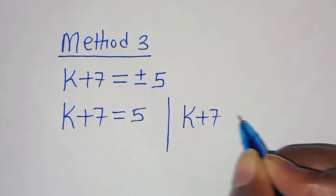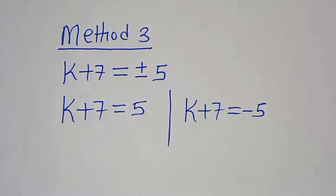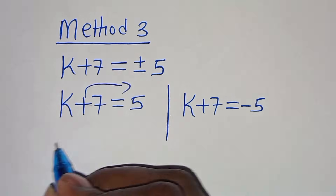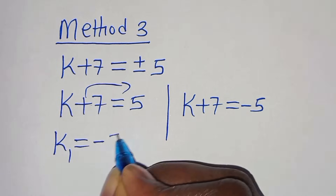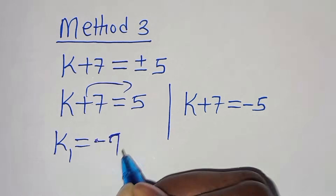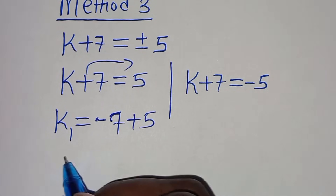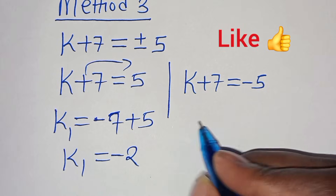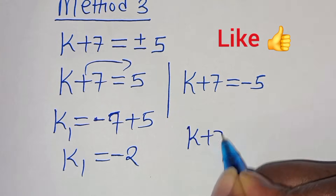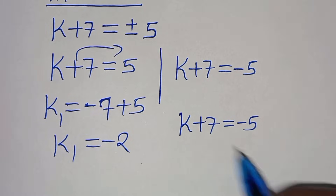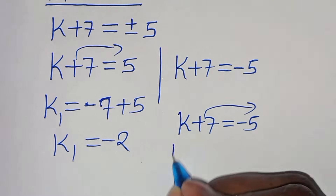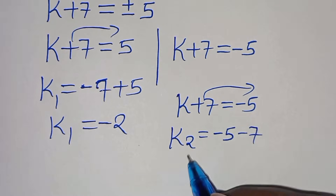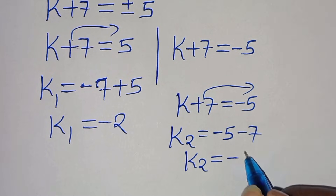This implies k plus 7 equals 5 and k plus 7 equals minus 5. For k₁: taking 7 to the right hand side, k₁ equals 5 minus 7, which means k₁ equals minus 2. For k₂: k plus 7 equals minus 5, so k₂ equals minus 5 minus 7, and k₂ equals minus 12.